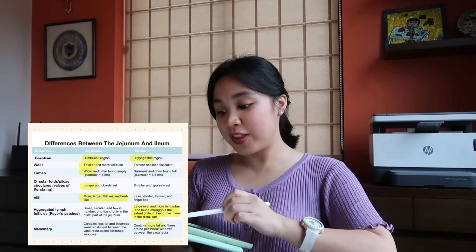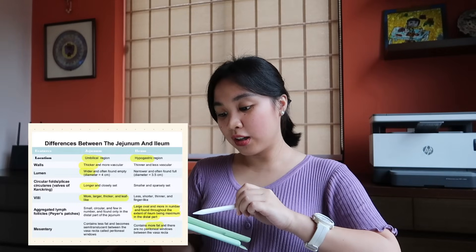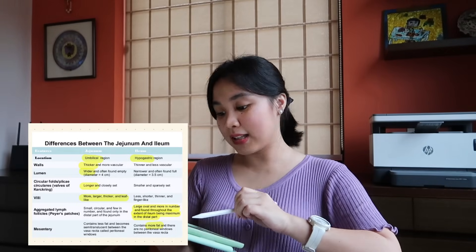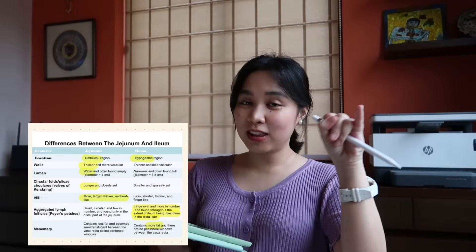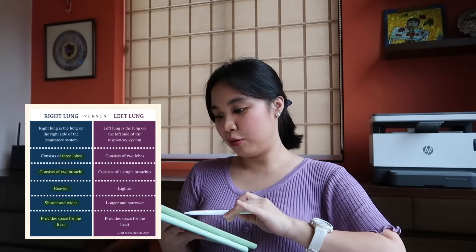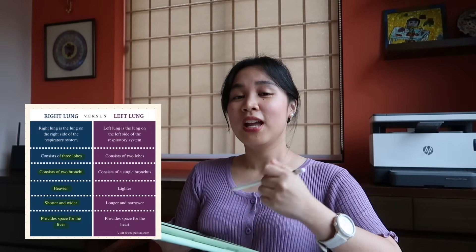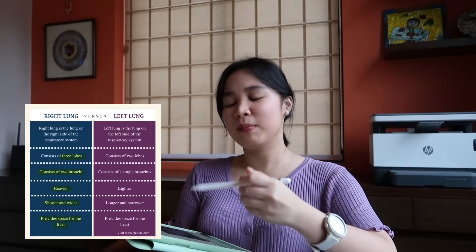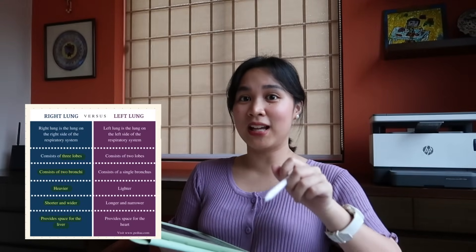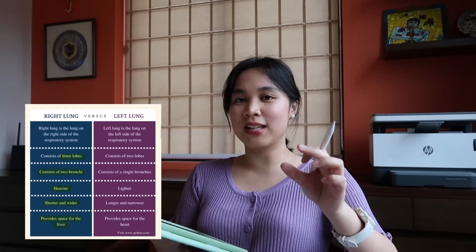For example, jejunum versus ileum: the ones I highlighted are the more dominant features. The jejunum has thicker and more vascular walls, a wider lumen, and longer circular folds — plicae circulares — compared to the ileum, which has more fat and Peyer's patches. Another popular anatomy comparison on exams is the right lung versus the left lung. Again, memorize the dominant one by heart rather than both together.